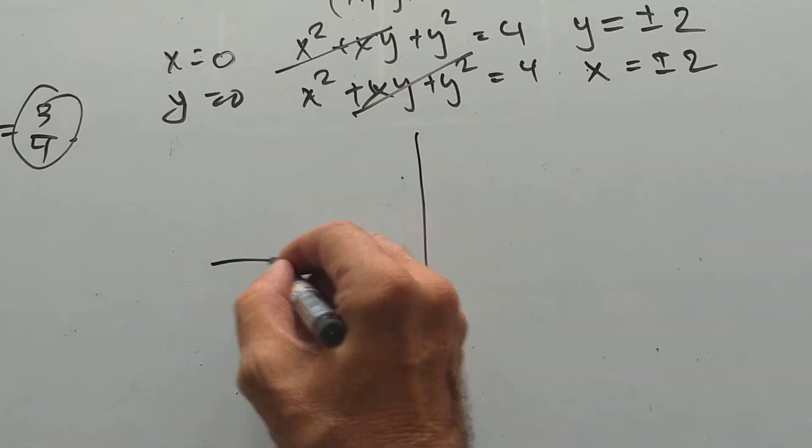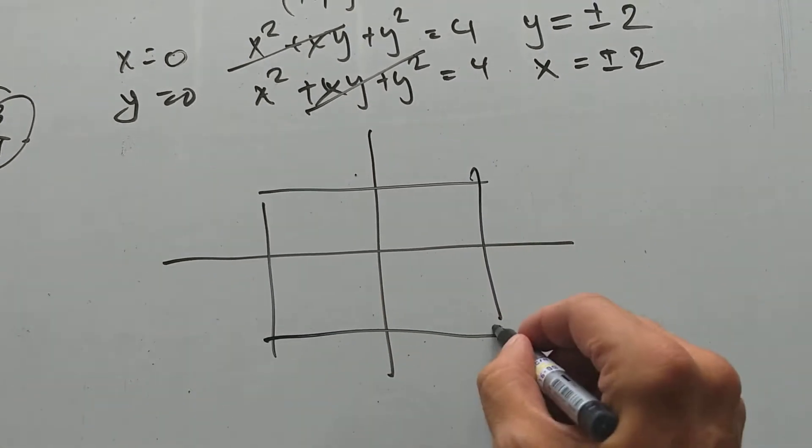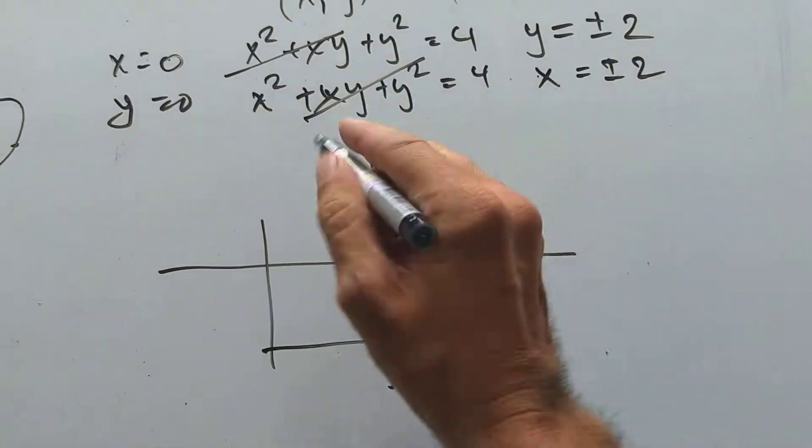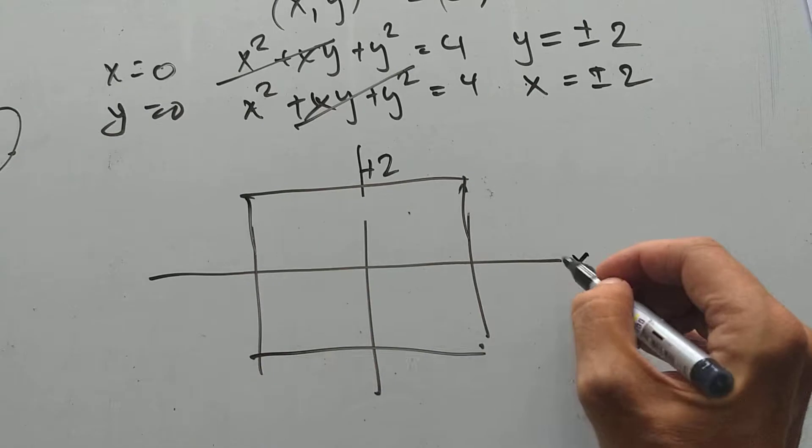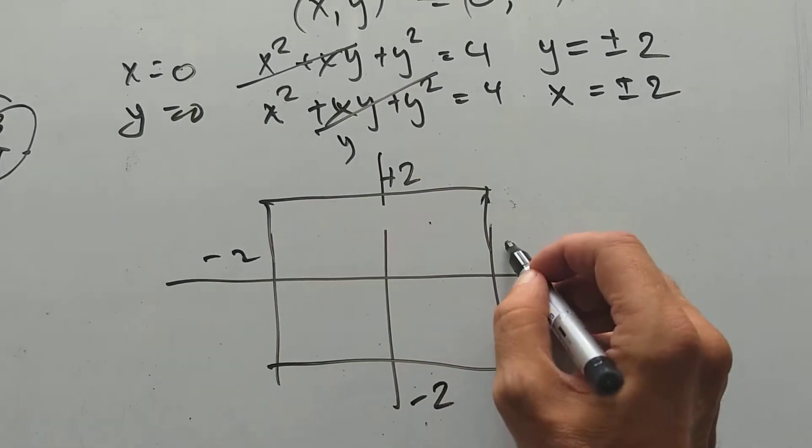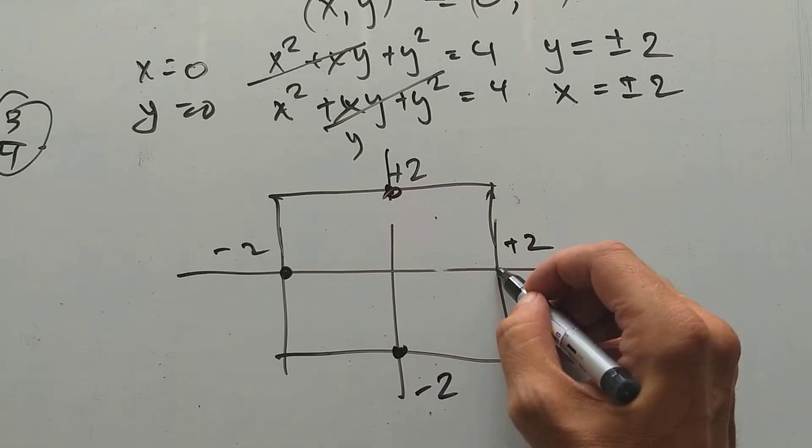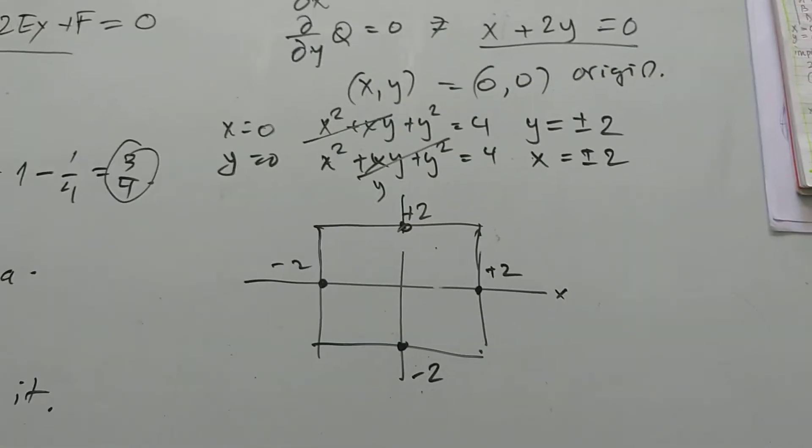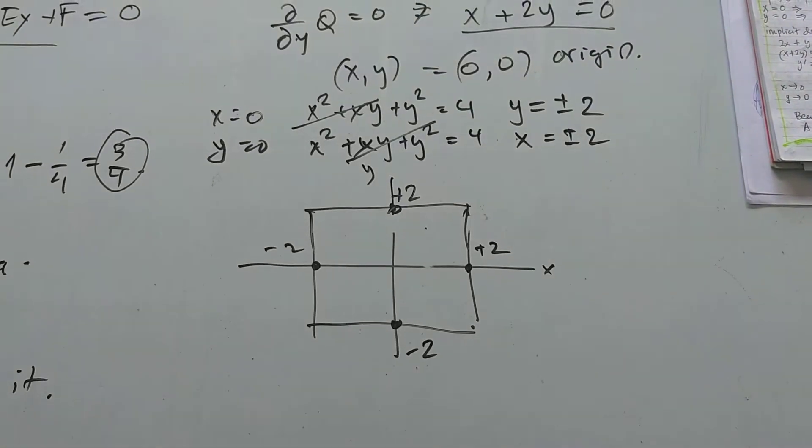So, so far, the reality is shaping up. Okay, it should be a square box like this. Here plus 2 on the Y axis, here minus 2, here minus 2 on the X axis, here plus 2. And I have points. My ellipse will actually be on these points. So it's shaping up. It's shaping up.